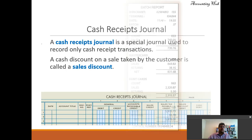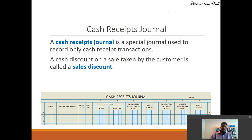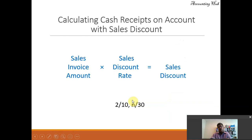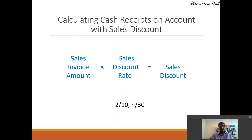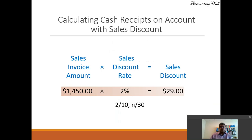We record transactions using a cash receipts journal. A cash receipts journal is a special journal used to record only cash receipt transactions. A cash discount on a sale taken by the customer is called a sales discount. The formula is: sales invoice amount times the sales discount rate equals the sales discount. For instance, $1,450 times 2% equals $29.